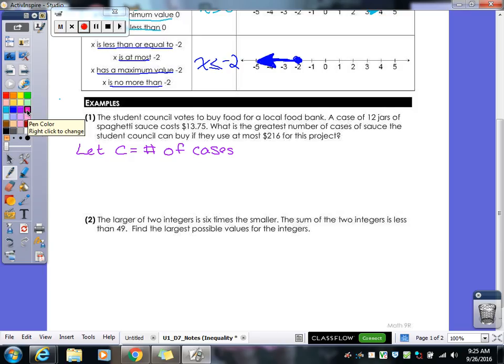Number of cases. So I'm going to say, let C equal number of cases. Now, the fact that there's 12 jars in a case, did we even need to know that? No. That's extra information. Let me just cross that out. So, how much does each case cost? So 13.75C. They can use at most $216. So if we look in our list above, at most is which sign?